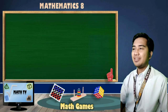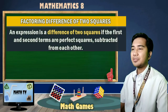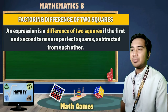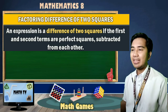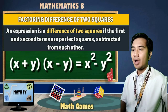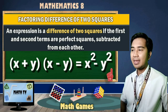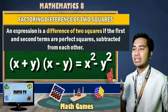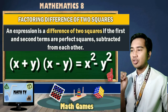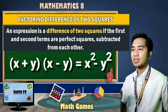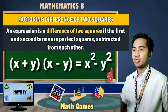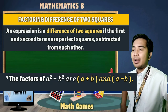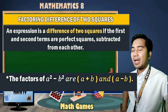Let's have the third type: factoring difference of two squares. An expression is a difference of two squares if the first and the second terms are perfect squares subtracted from each other. Recall that x plus y times x minus y gives the product x squared minus y squared — this is called the difference of two squares. The factors of a squared minus b squared are a plus b and a minus b.